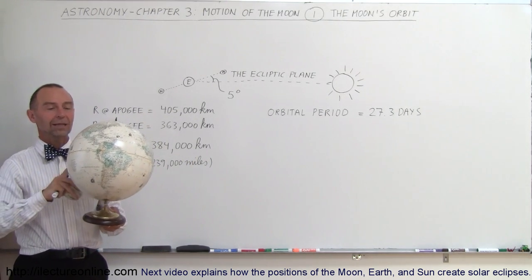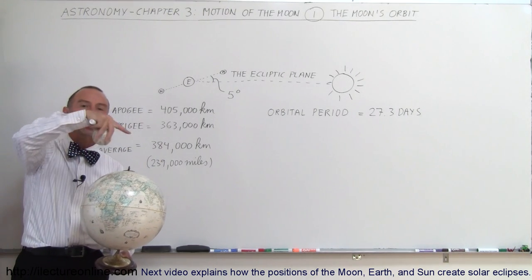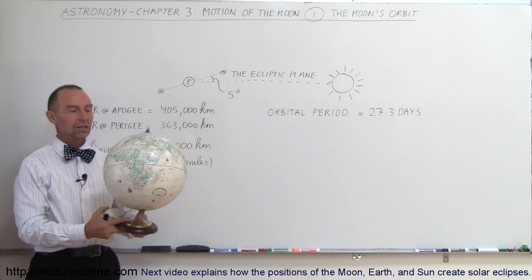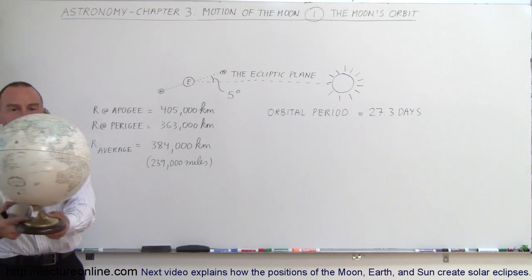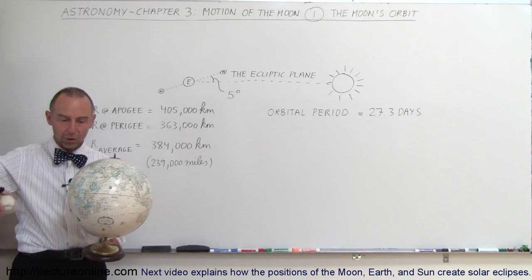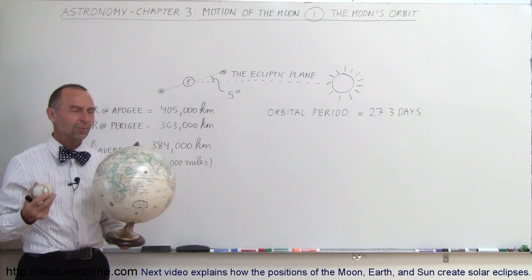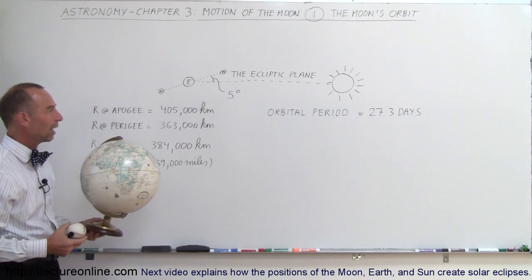And it's interesting to note that when the Earth rotates on its axis, looking from the North, it rotates in a counterclockwise direction. The Earth will go around the Sun, orbit around the Sun in a counterclockwise direction, again looking from the North, and the Moon orbits around the Earth in a counterclockwise direction. So there seems to be a certain order in our universe in that way.